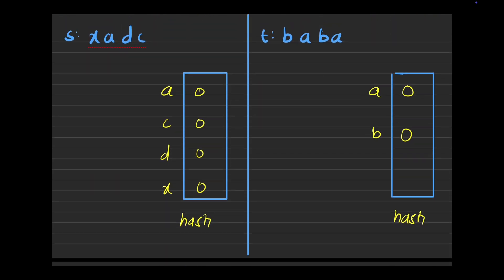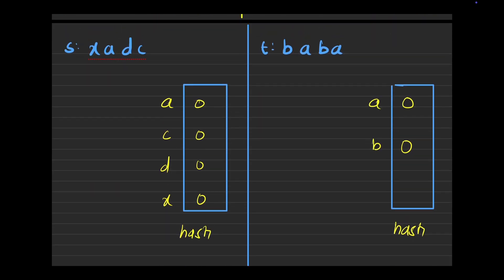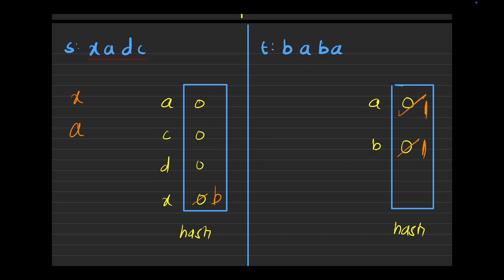I come across X. I check: is X marked with anyone? No — all are 0 initially, meaning none of the characters are marked. So X is not marked — I can mark it to B. I check: is B mapped with anyone else? No. So I replace it to 1 and map X with B. Then I come across A — A is not mapped with anyone else. I can map A to A. I check: is this A in T mapped with anyone? No. So I replace it as 1 and map A with A.